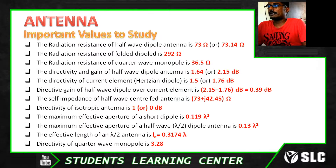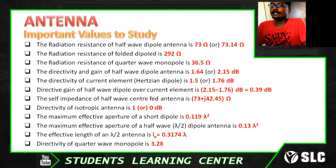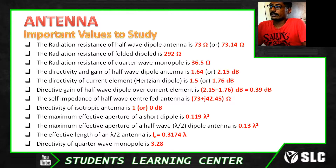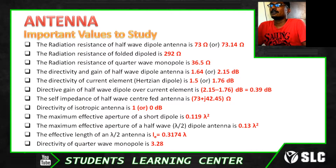The directivity and gain of a half wave dipole antenna is 1.64 or 2.15 dB. The directivity of a current element is 1.5 or 1.76 dB. The next value is the directivity of a half wave dipole over a current element.